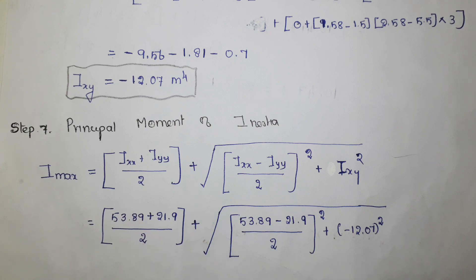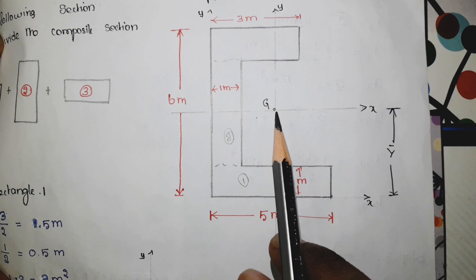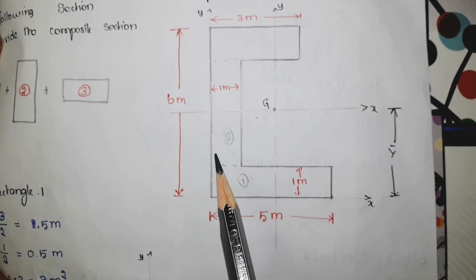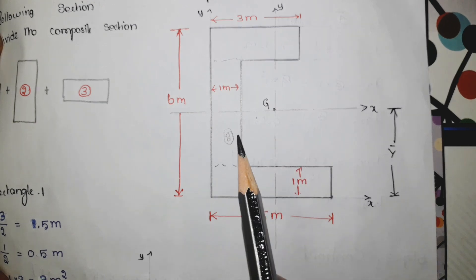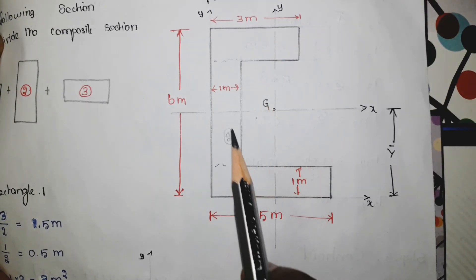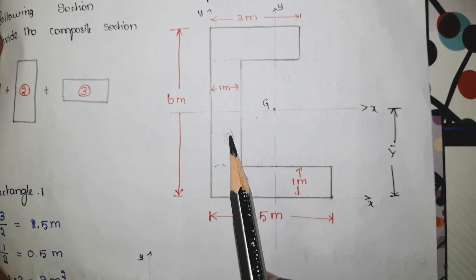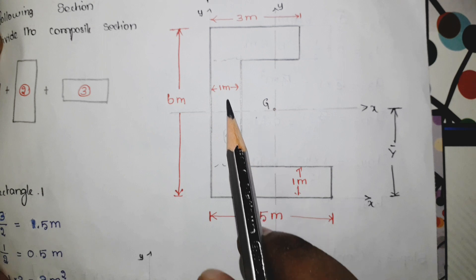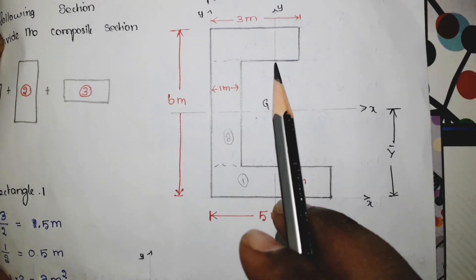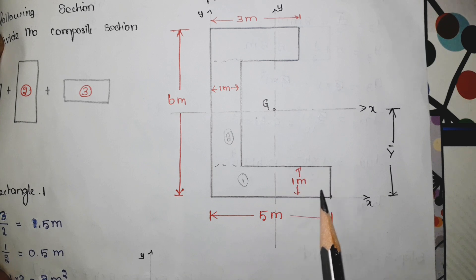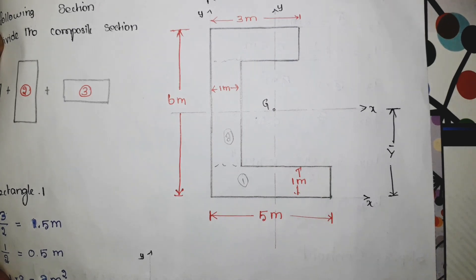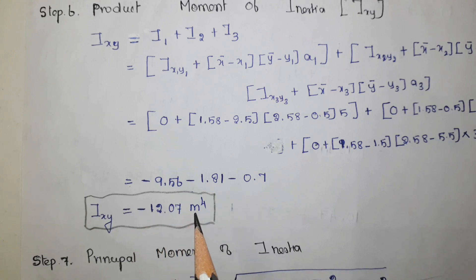The answer is negative. Looking at the diagram: with the centroidal x-axis and centroidal y-axis dividing the section into four quadrants, the product moment of inertia is positive in the first and third quadrants and negative in the second and fourth quadrants. In this section, the second and third quadrants have equal area distribution, so they cancel each other. In the first and fourth quadrants, the fourth quadrant has more material, so the product moment of inertia is negative — that is why the answer is minus 12.07 meter to the power 4.